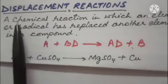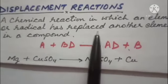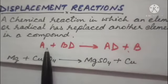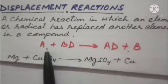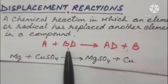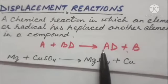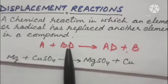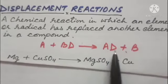What is a displacement reaction? A chemical reaction in which an element or radical has replaced another element in a compound is called a displacement reaction. For example, A is an element and it combines with compound BD. The element A replaces B from compound BD, coming in place of B, forming AD and B as another substance.